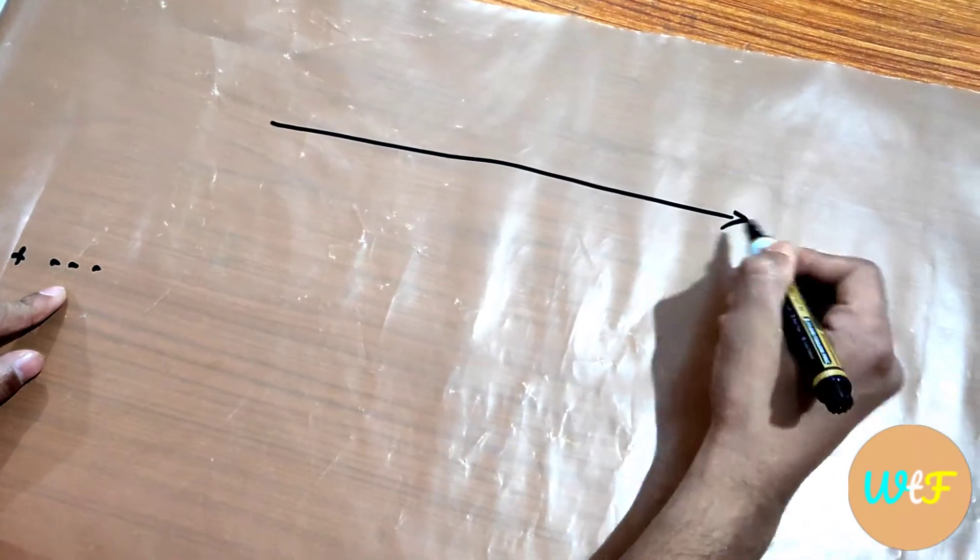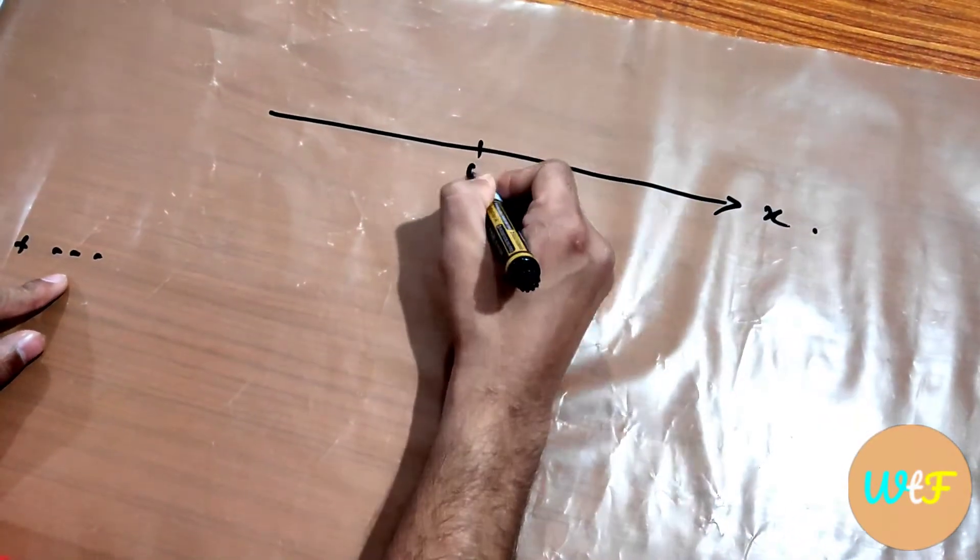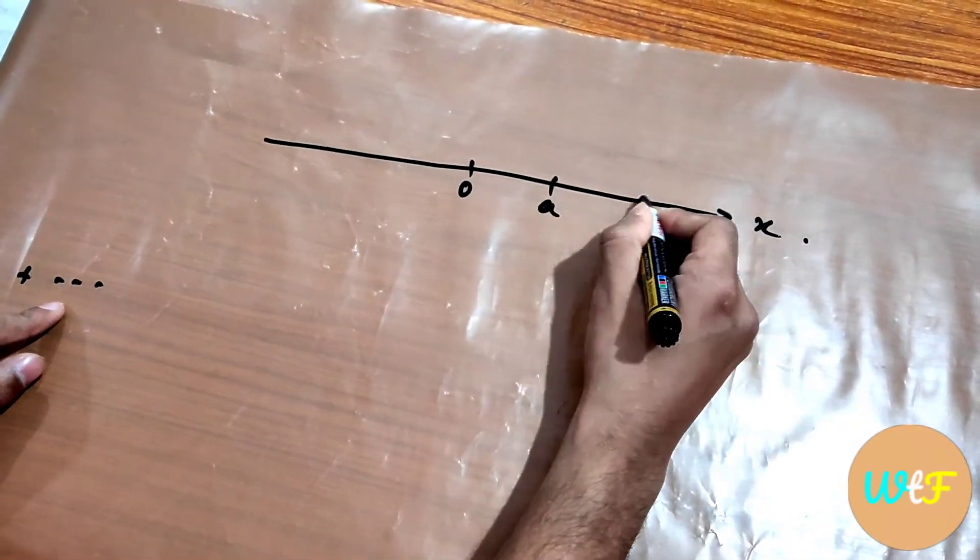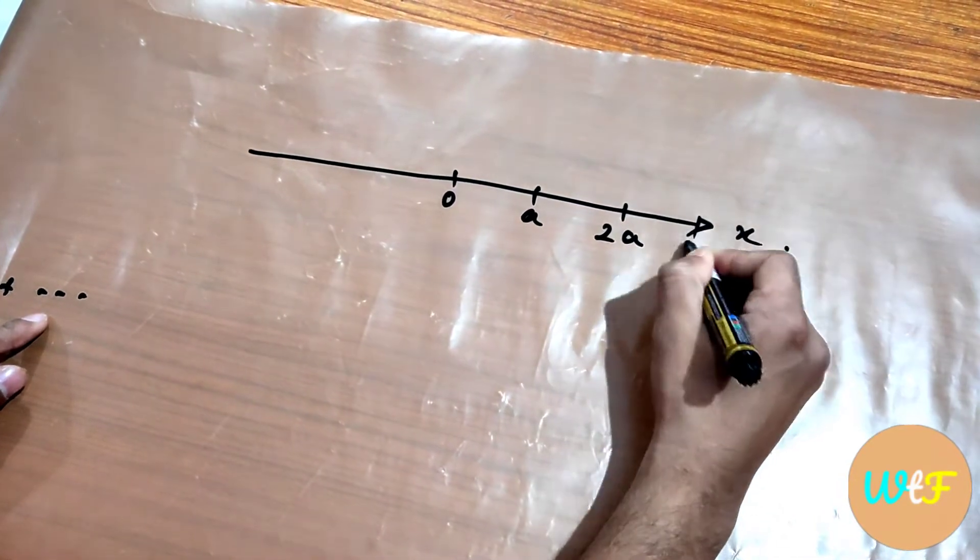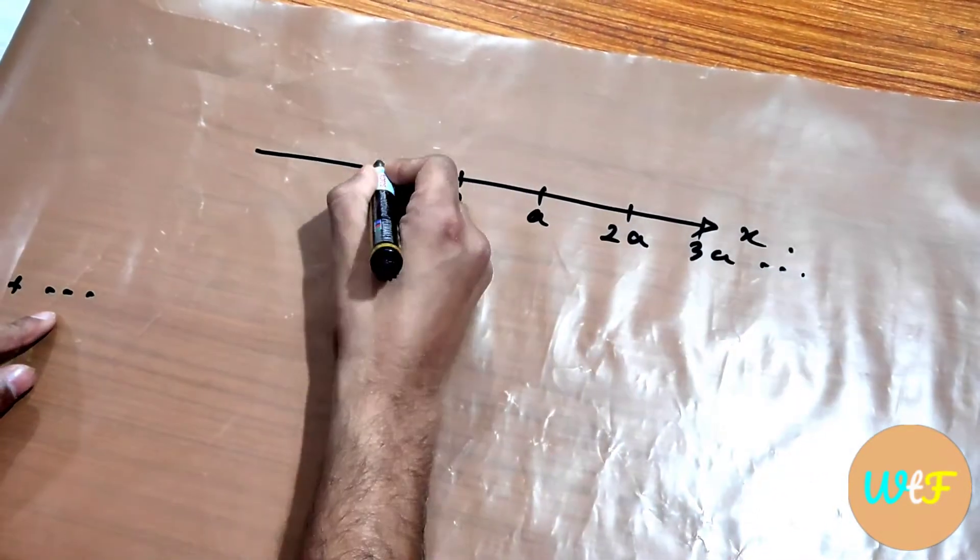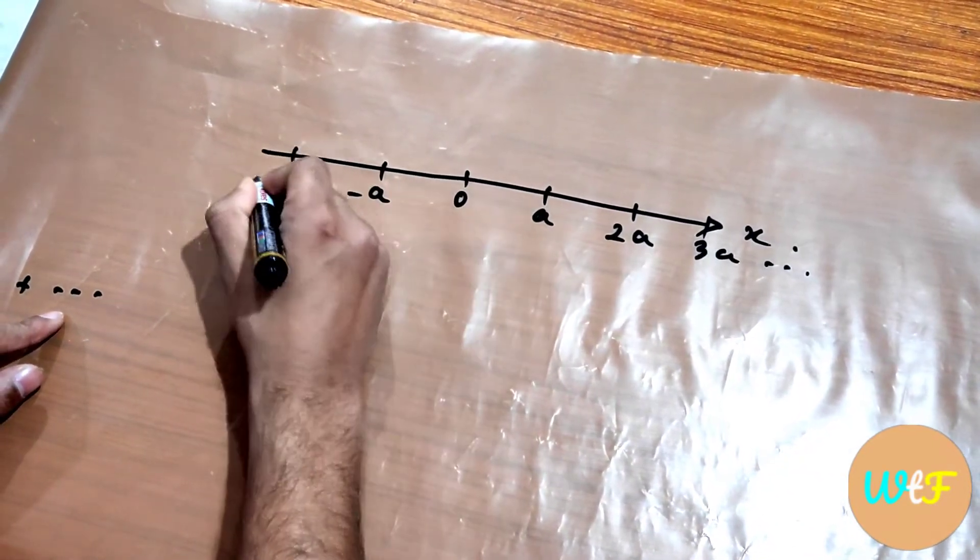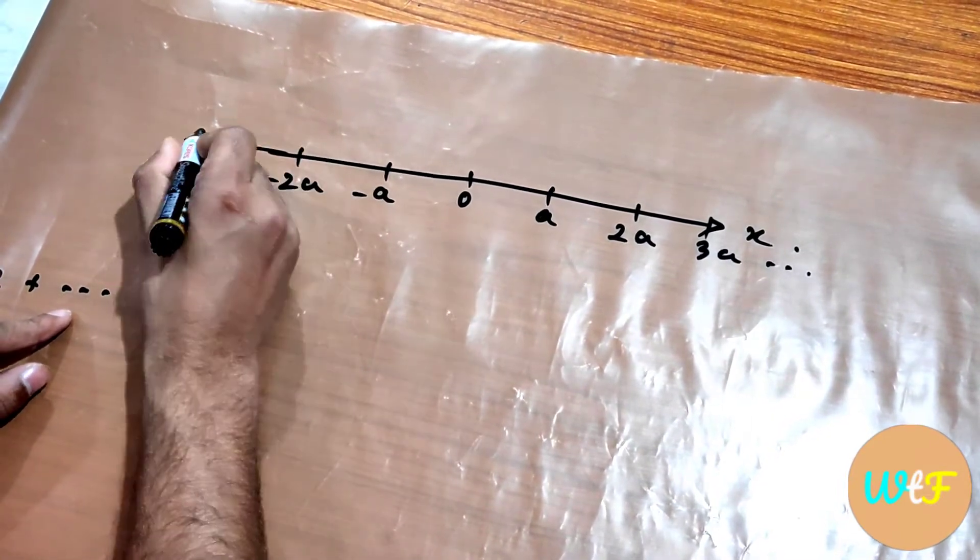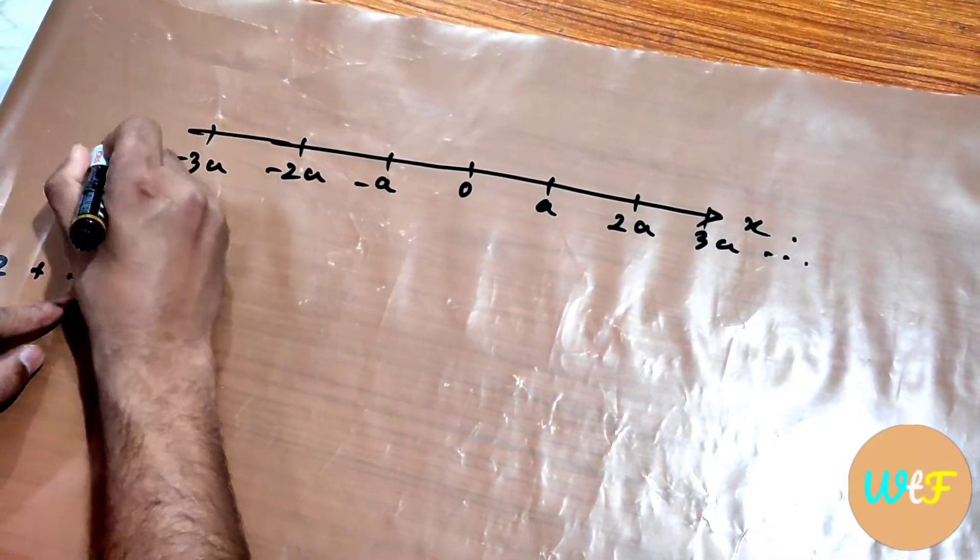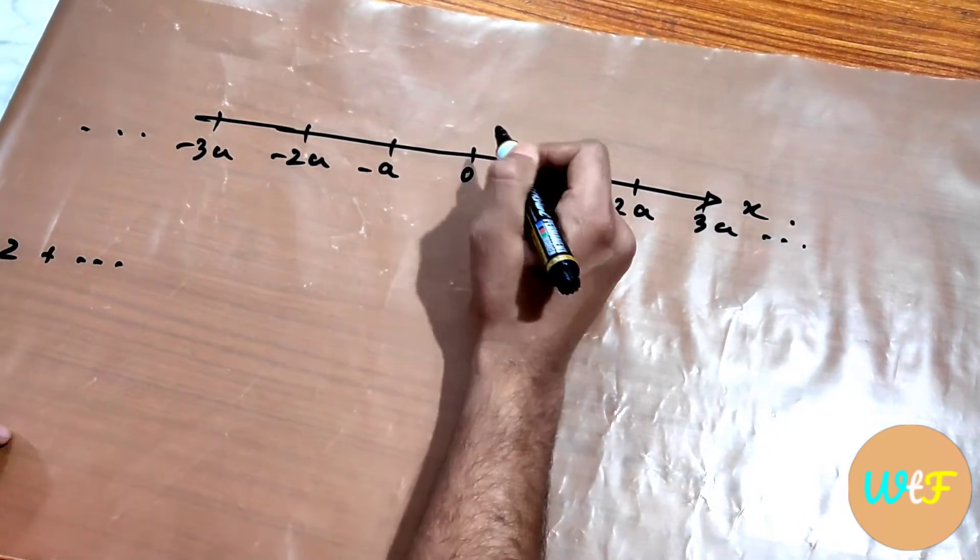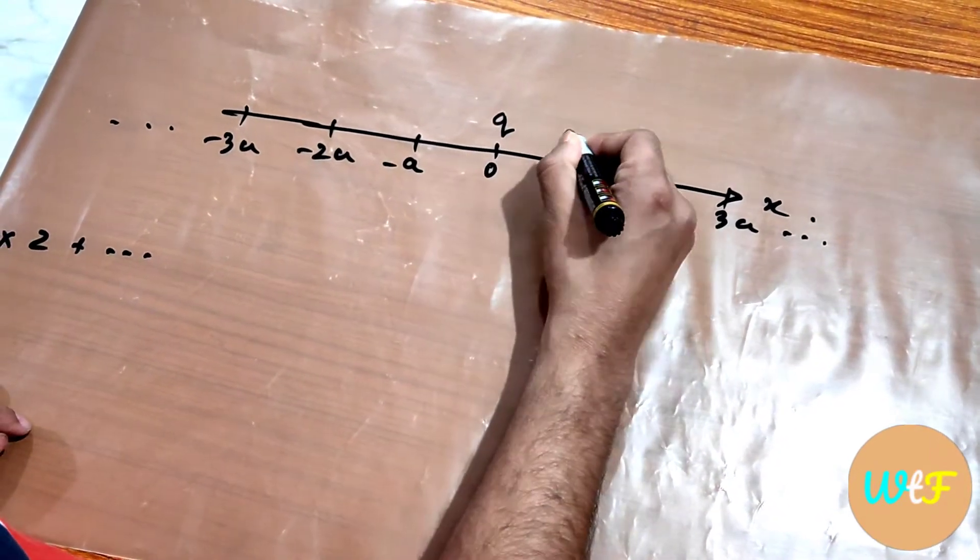Suppose there is an x-axis with origin here, a, 2a, 3a and so on, minus a, minus 2a, minus 3a and so on to infinity from both sides.